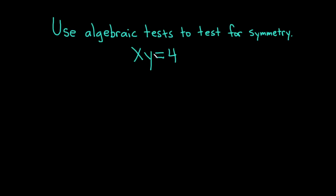In this video, we're going to use algebraic tests to test for symmetry in the equation x times y equals 4. Let's go ahead and carefully work through this solution. We're going to test for x-axis symmetry, y-axis symmetry, and origin symmetry.